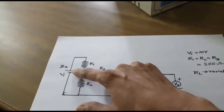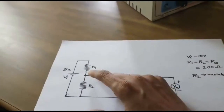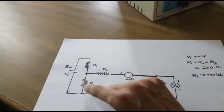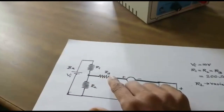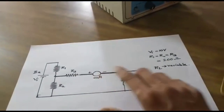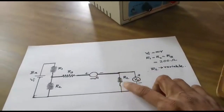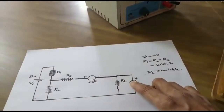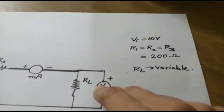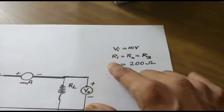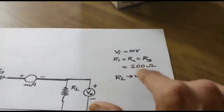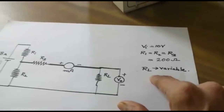Now let us look at the circuit here. We are connecting the positive of the battery to R1, from R1 to R2, R2 to the negative of the battery; in between R1 and R2 to R3, and to a milli-ammeter, from there to a load resistance, and the output is measured using a multimeter. The input VI is equal to 10 volts, R1 = R2 = R3 = 200 ohms, and RL is variable.